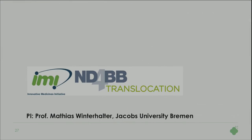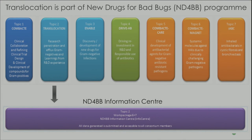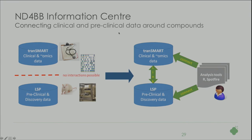The last case is Translocation, also from IMI. Translocation is part of a larger program called New Drugs for Bad Bugs, and our focus is on gram-negative bacteria. One of the challenges here, because it's driven from a pharmaceutical drug development angle, is to combine clinical and preclinical data. We use another software called LSP from Grid System, a Danish company, to store all the preclinical and discovery data — very much drug and chemical focused. And we use Transmart for the clinical and omics data, with R or Spotfire to integrate the two.